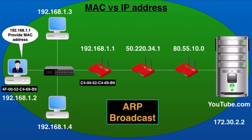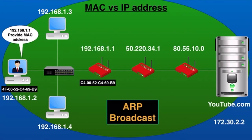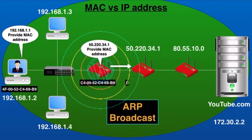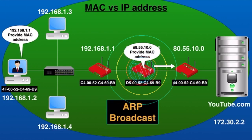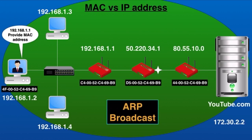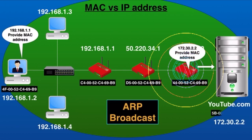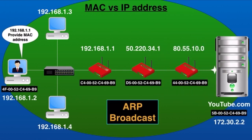Once the device has the router's MAC address, it sends the data packet to the router. The router checks YouTube's IP address and defines the best route for the data packet to reach its destination. Before forwarding, it also needs the MAC address of the next router, so it runs another ARP broadcast. This continues — each router needs the MAC address of the next router — until the data packet reaches its final router, which then needs the MAC address of the YouTube server. Once it has that, the data packet reaches its final destination.